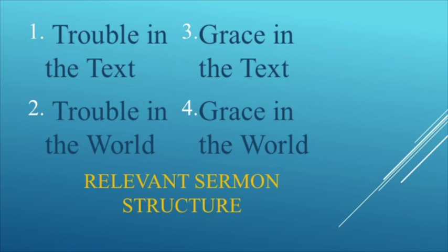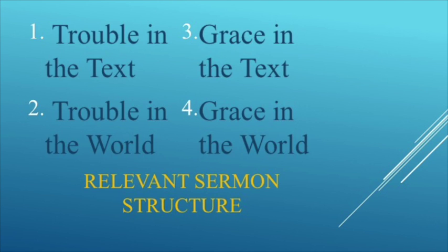The last sermon structure we will look at comes from Paul Scott Wilson. Here is how this one works. First, there is trouble in the text — you explain the text and the problem found there. Next, you move to trouble in the world — you make a parallel, a bridge from then to now. Then, the third portion, you go back to the text to find the solution, which is God's grace and God's work, and then you move to God's grace in the world. This sermon structure is very helpful in terms of relevance.